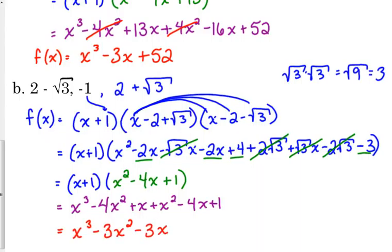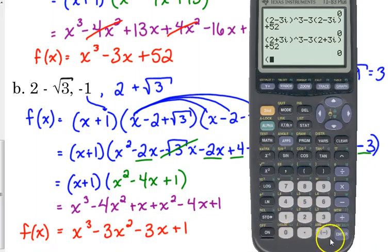So, then we just need to distribute the binomial to the trinomial. So, our final polynomial is x cubed minus 3x squared minus 3x plus 1. And, once again, you can plug in your roots to check. It's a really easy way to catch mistakes, guys.